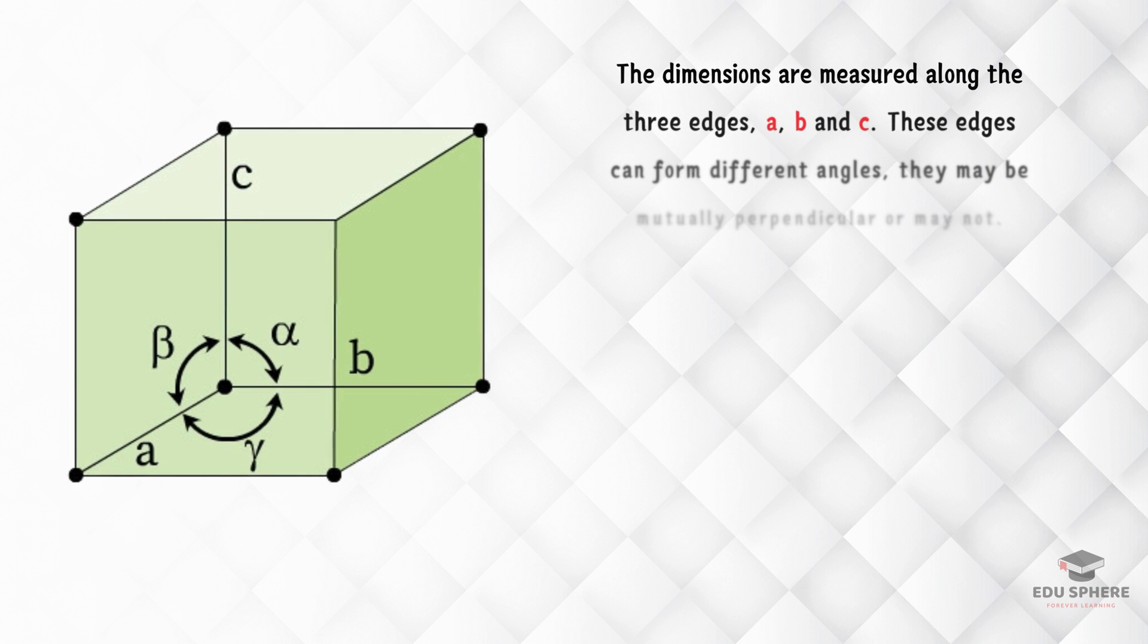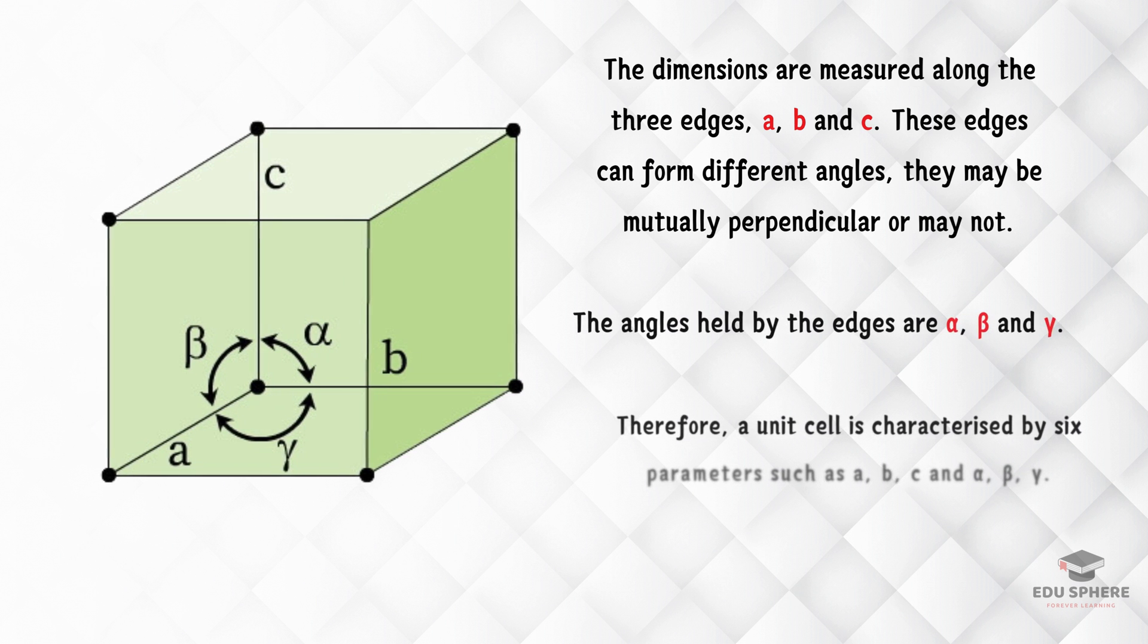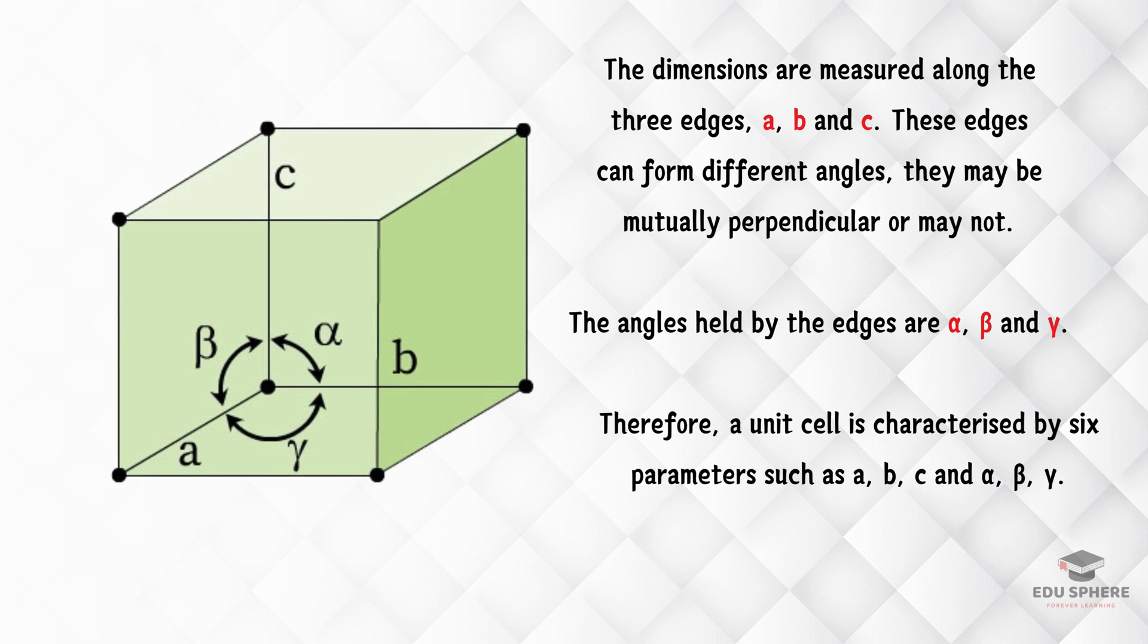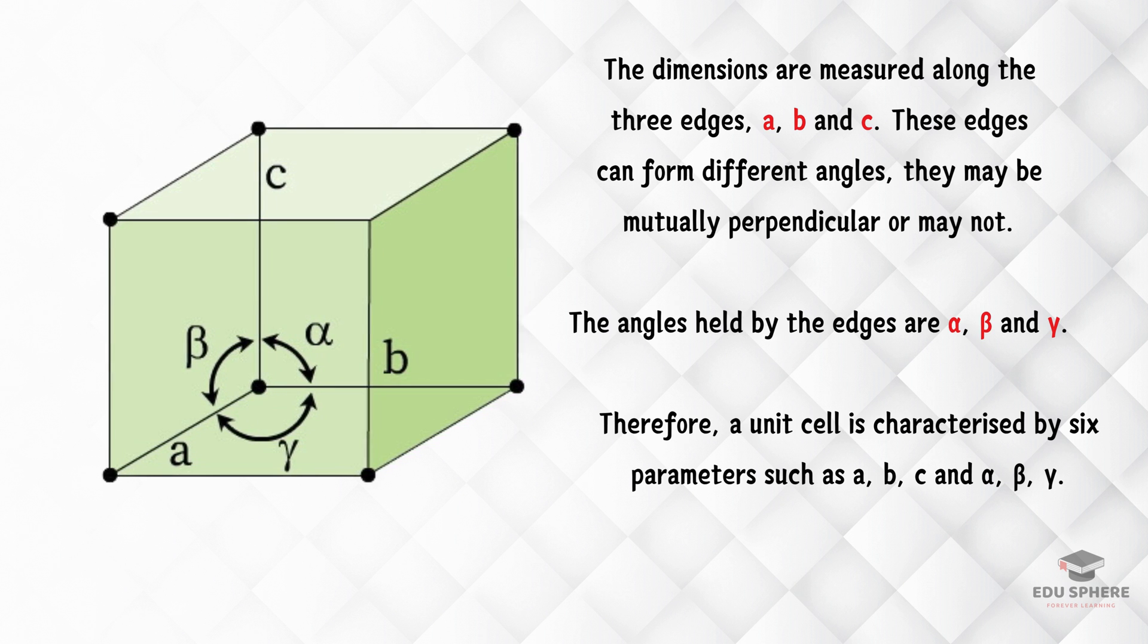Unit cells are characterized by six parameters: the lengths of the three edges A, B, and C, and the angles between them, alpha, beta, and gamma. These parameters define the shape and size of the unit cell.